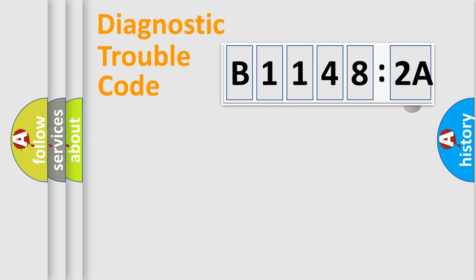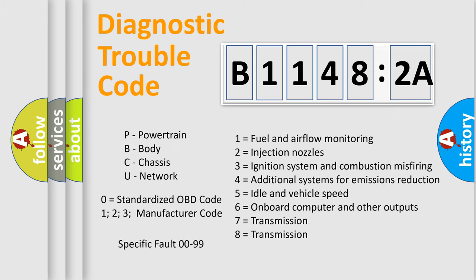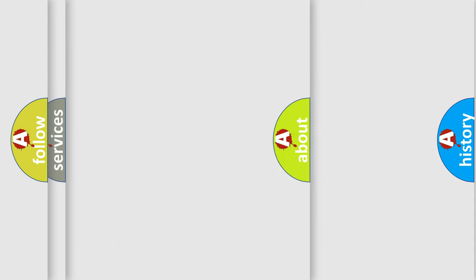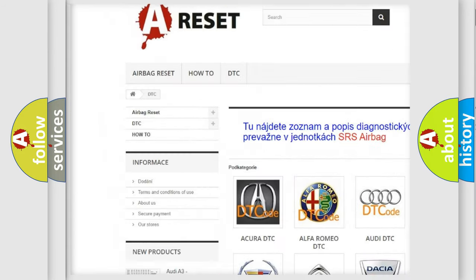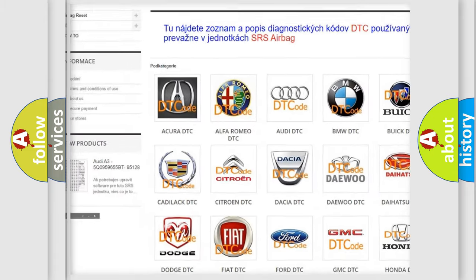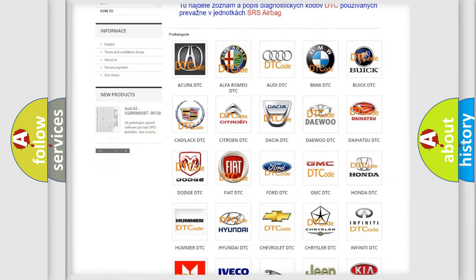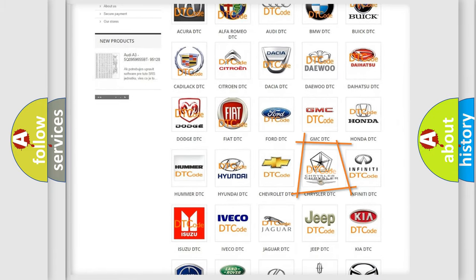Our website airbagreset.sk produces useful videos for you. You do not have to go through the OBD2 protocol anymore to know how to troubleshoot any car breakdown. You will find all the diagnostic codes that can be diagnosed in Chrysler vehicles, and many other useful things. The following demonstration will help you look into the world of software for car control units.